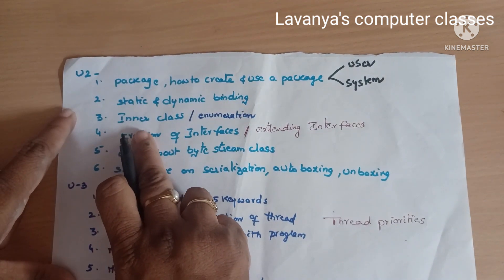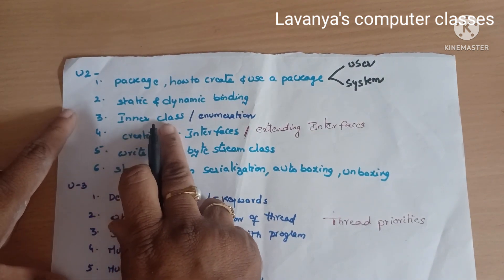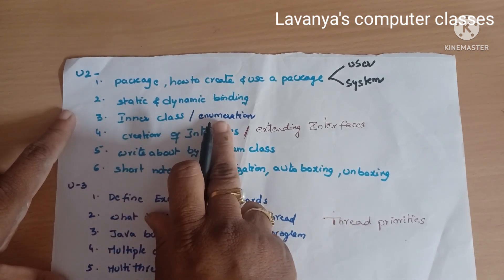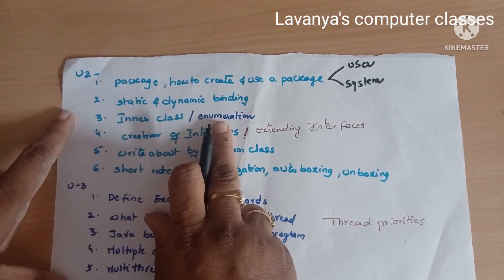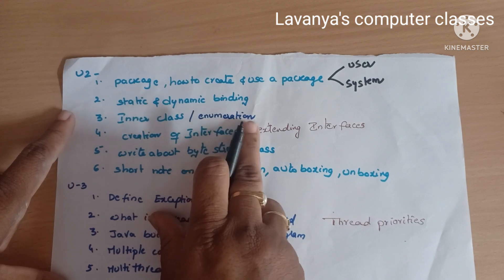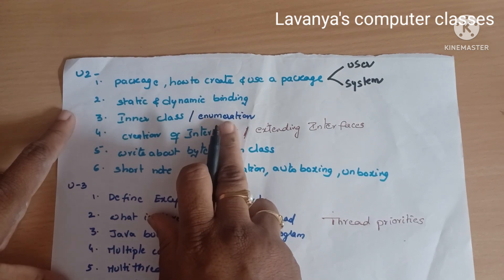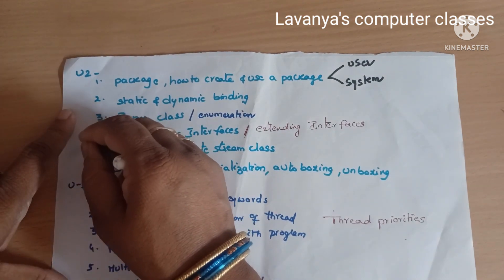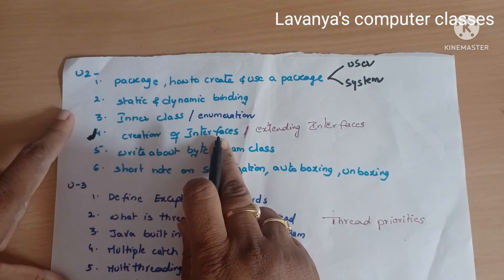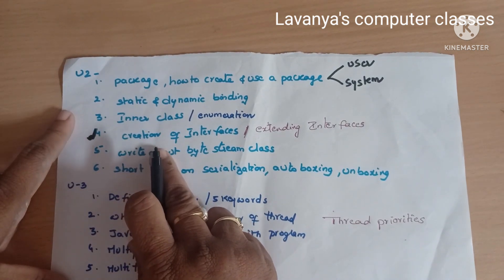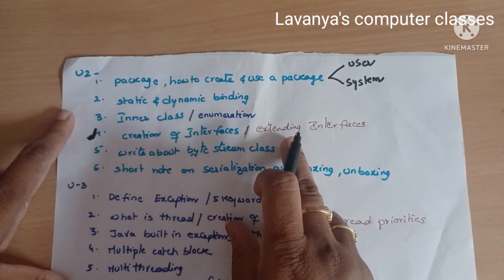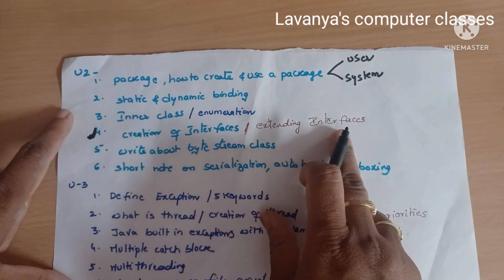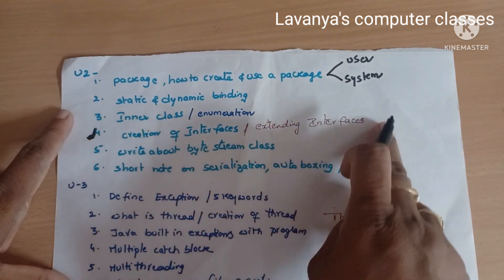An important question in Unit 2 is inner classes — what are inner classes and how to create them. Enumerated data type is also covered here. Interfaces are very very important: what is an interface, how to create an interface, how to extend it, and where we implement interfaces — read all interface concepts thoroughly.